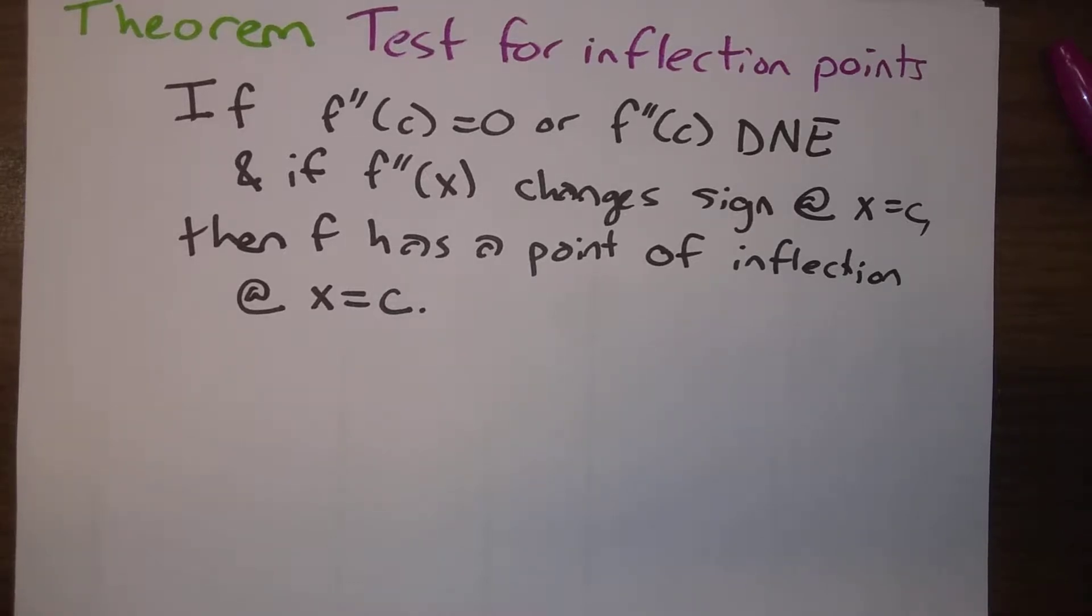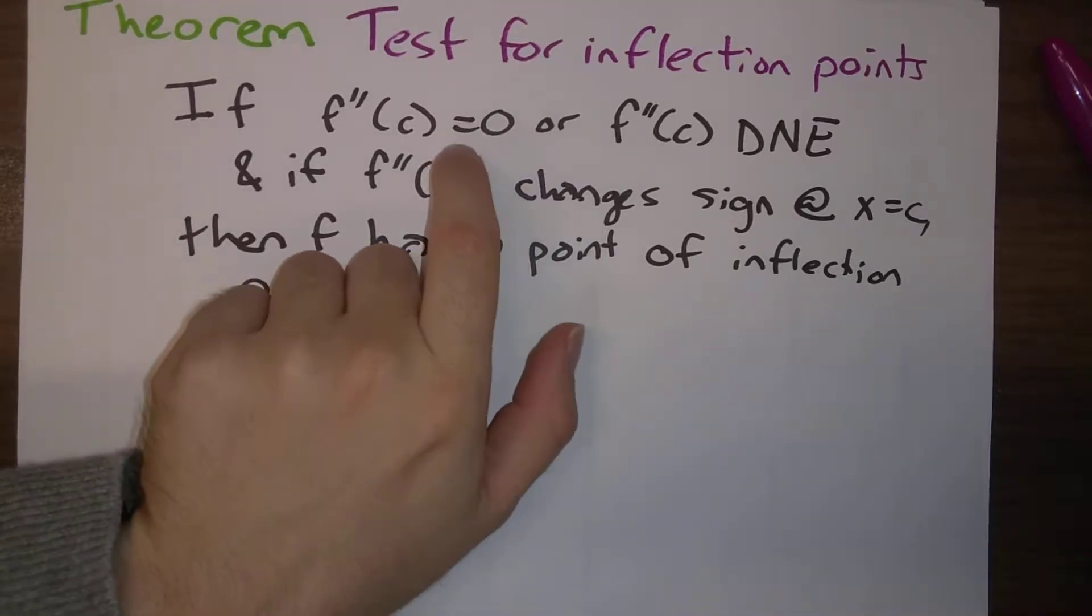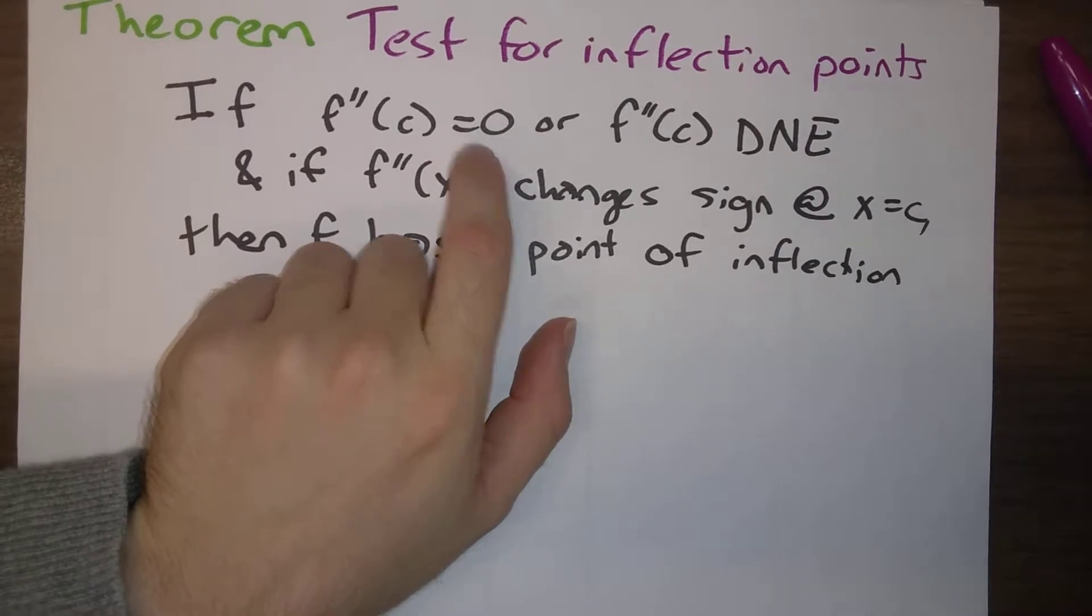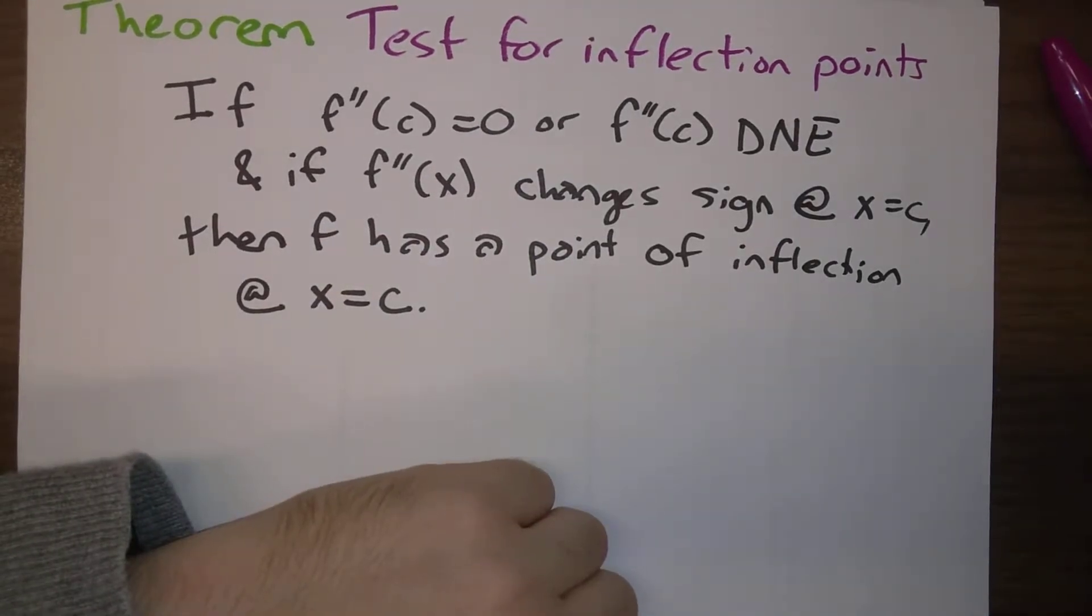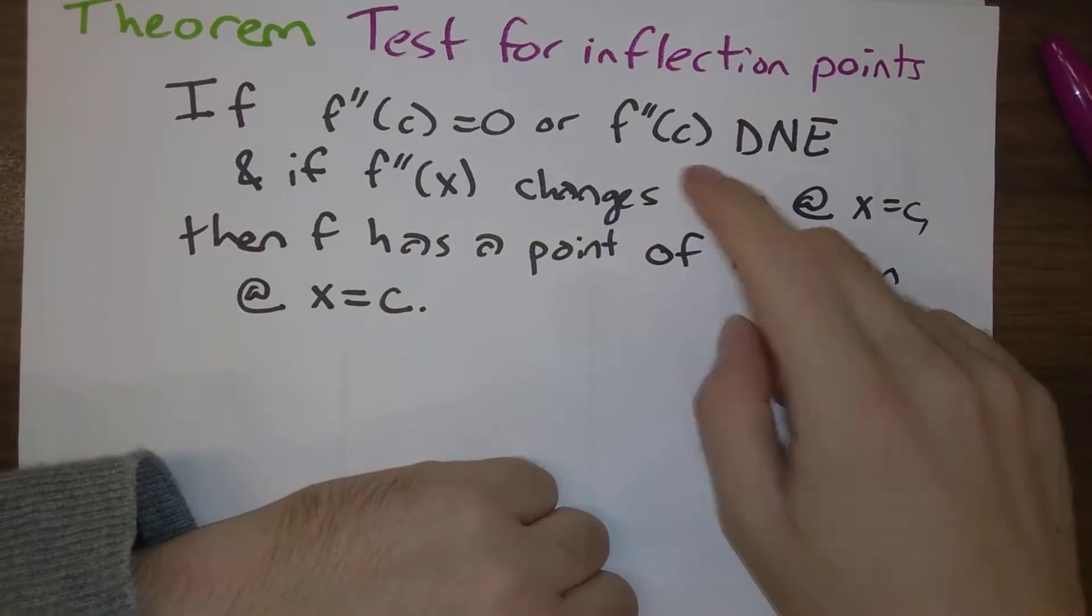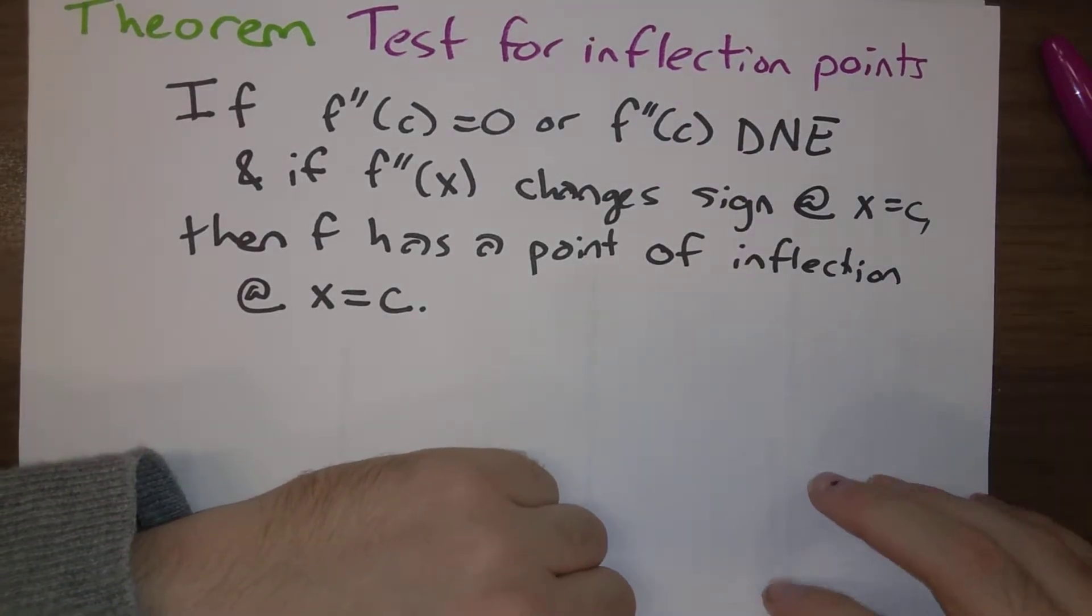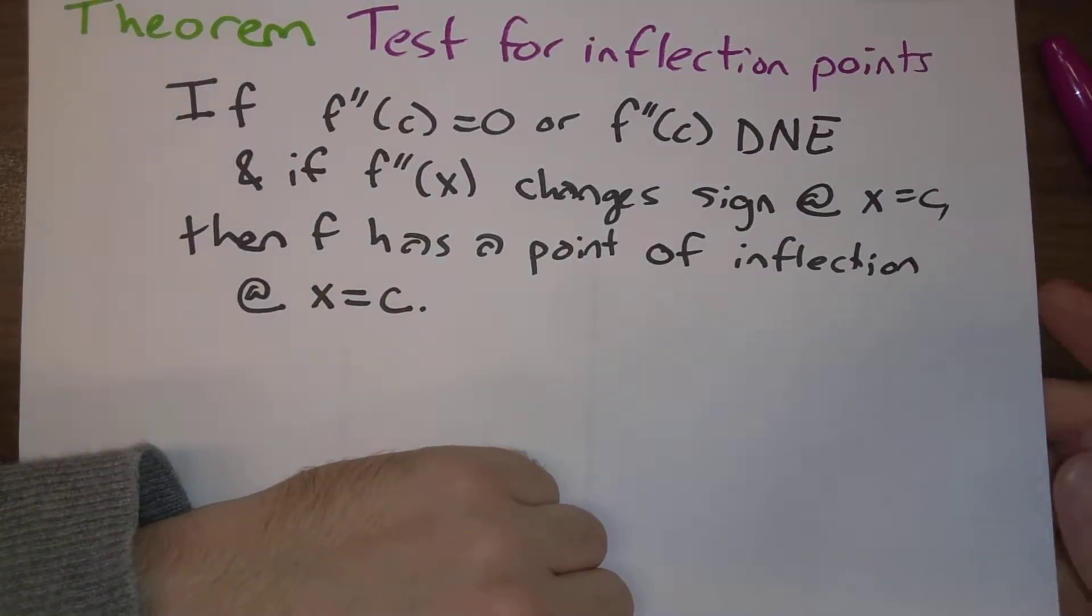In our previous videos, we had this test for an inflection point, and the thing that we focused on was the case where the second derivative was equal to zero. But of course, we should acknowledge that it's also possible for us to have an inflection point when the second derivative does not exist.